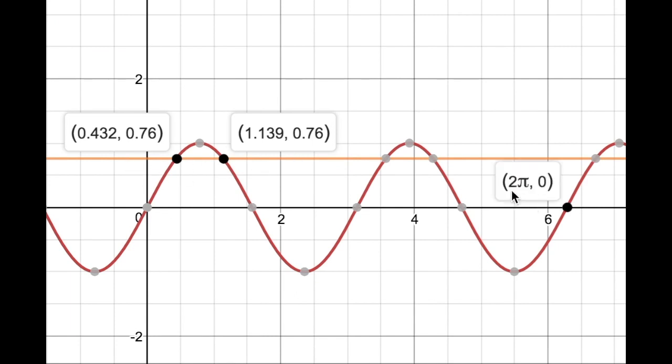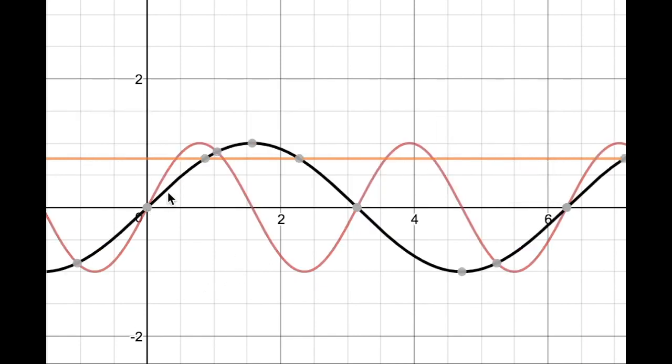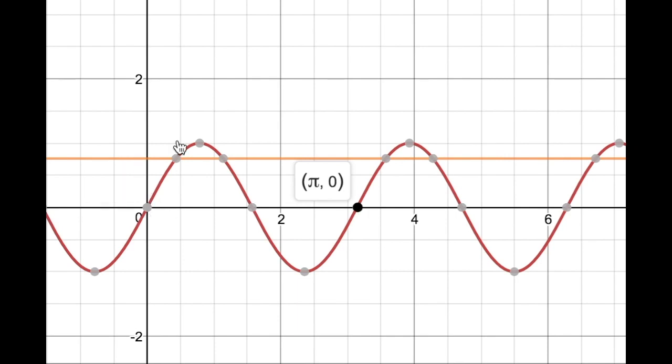However, remember we're looking on the interval 2π, and you can see here I actually have two more solutions. Now this should make sense. Remember the function sine of x has a period of 2π. What we've done is compress one full cycle of the sine graph into π, which means two full cycles will fit into 2π.